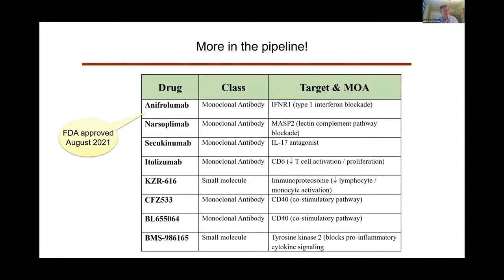Last slide — there is a multitude of new medications in the pipeline. I want to highlight anifrolumab, a monoclonal antibody against the interferon receptor type 1, which was FDA-approved this year for systemic lupus. The lupus nephritis study is underway, and we're interested to see the effects of this medication.